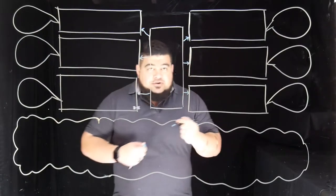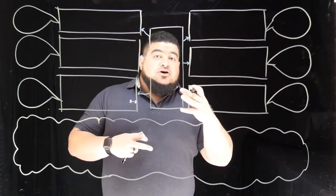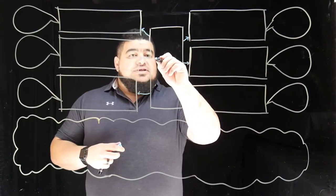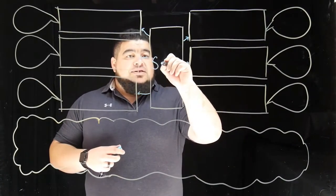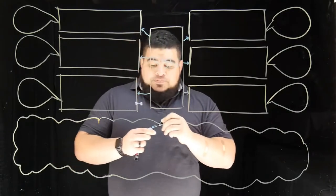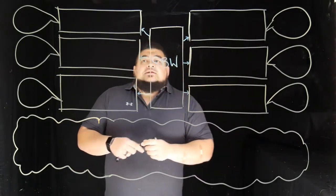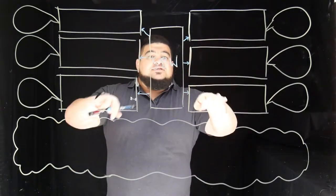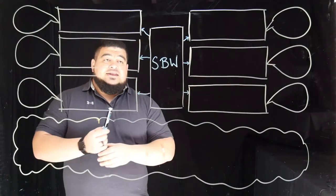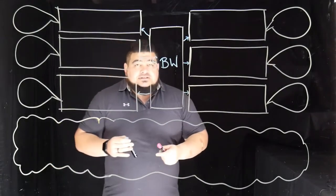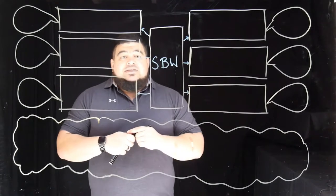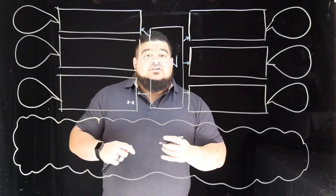We put our content — the thing we're looking at — in the middle. In this case it's Sunny Bill Williams, so SBW. Then down in the boxes, that's where we start writing his characteristics. One characteristic of Sunny Bill is that he is 32 years old.